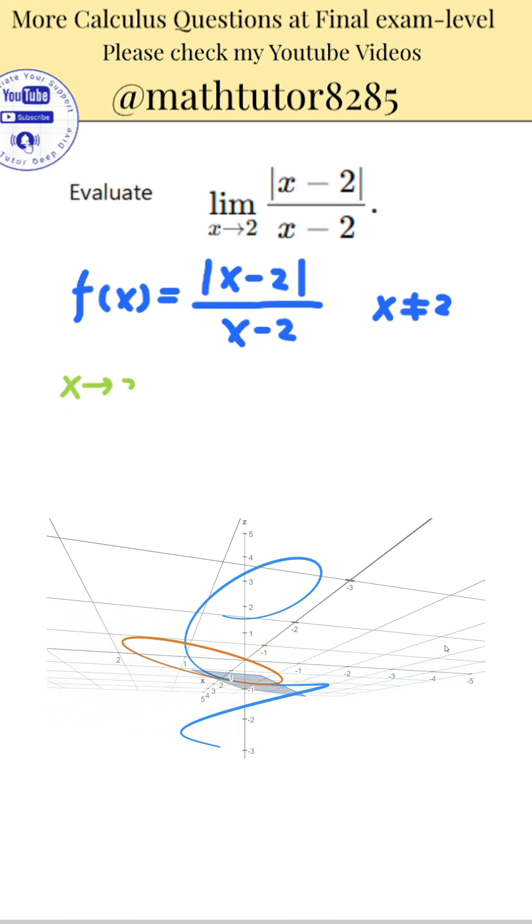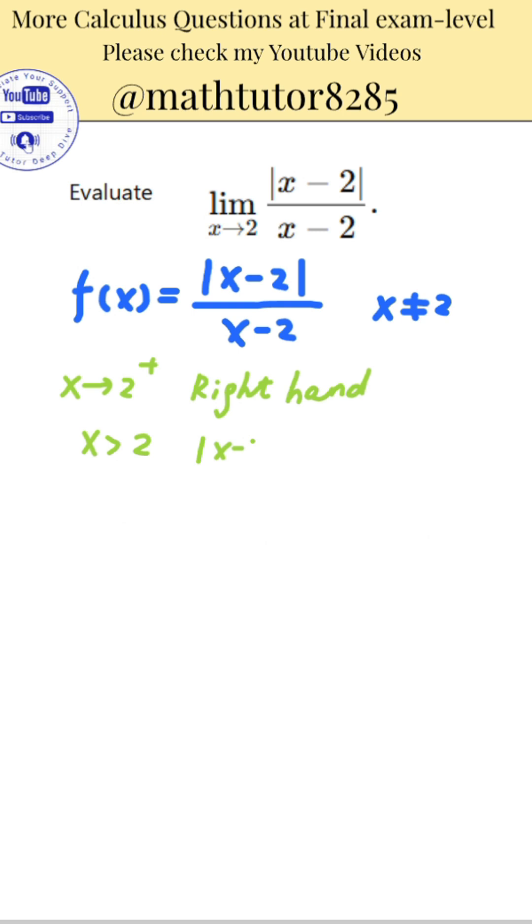Next, consider the right-hand limit as x approaches 2 from values greater than 2. When x is greater than 2, the expression x minus 2 is positive. So the absolute value of x minus 2 is simply x minus 2. Therefore, the expression becomes x minus 2 divided by x minus 2, which simplifies to 1. So the limit from the right-hand side is 1.